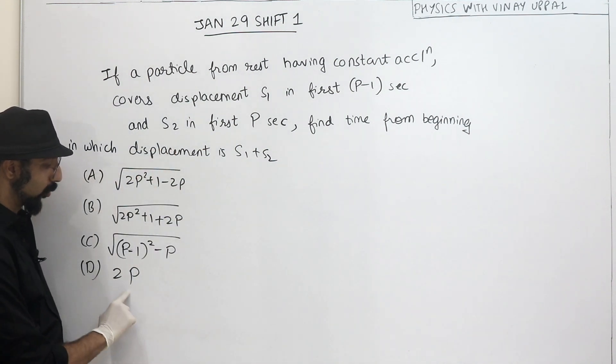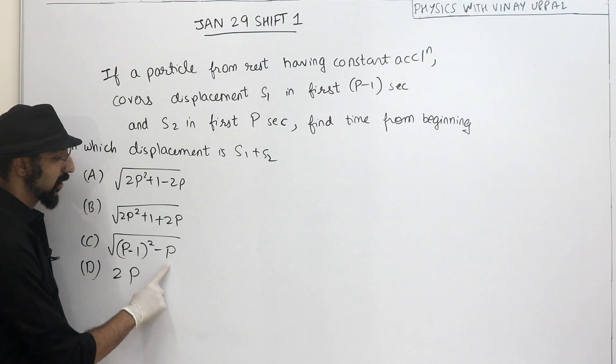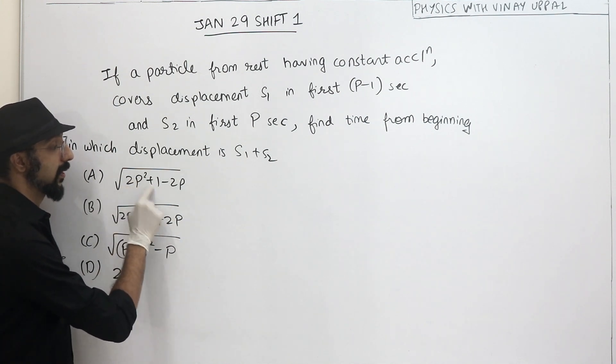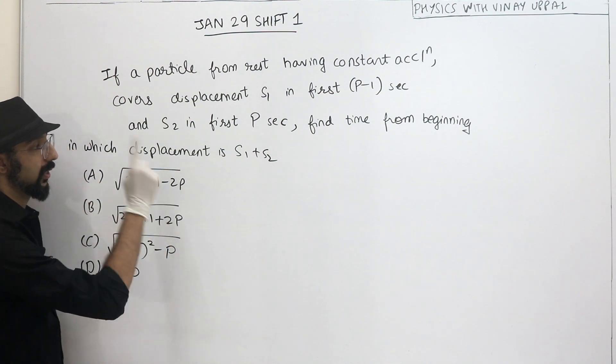If p-1 is 0, then this will be 2. If p-1 is 0, then this will be imaginary. This will be 1. If p-1 is 0, then 2 plus 1, 3 minus 2 is equal to 1. This is the only answer that will match.